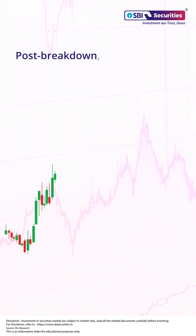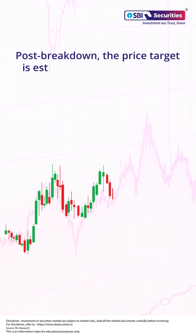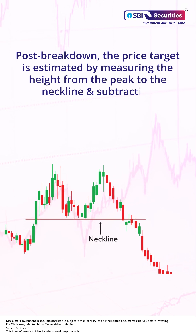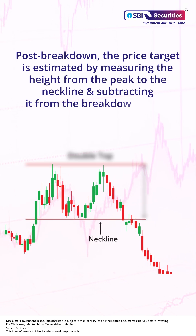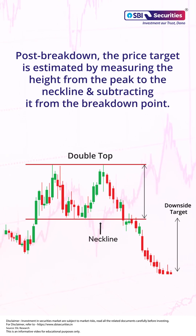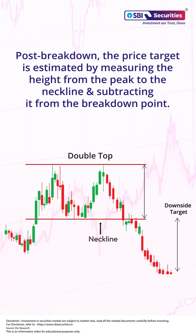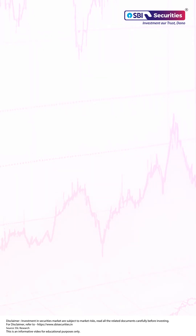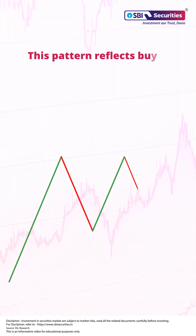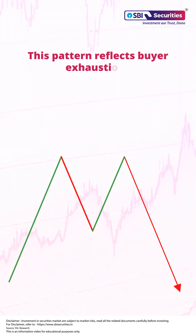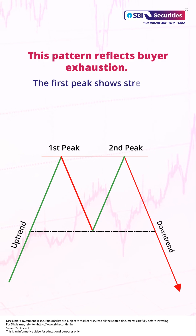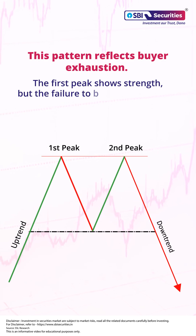Post breakdown, the price target is estimated by measuring the height from the peak to the neckline and subtracting it from the breakdown point. This pattern reflects buyer exhaustion — the first peak shows strength, but the failure to break higher on the second peak signals waning demand.